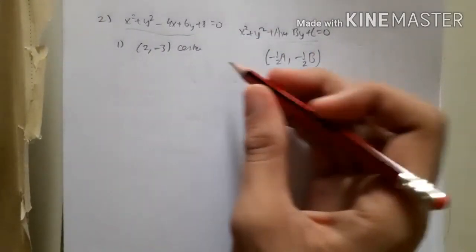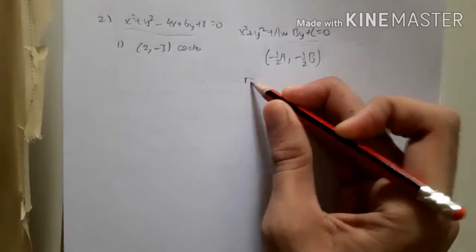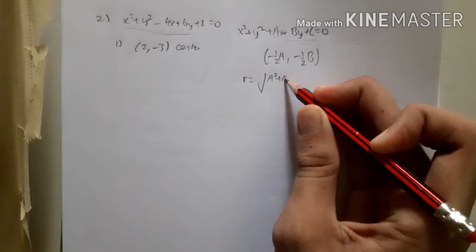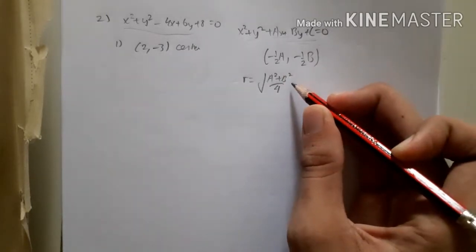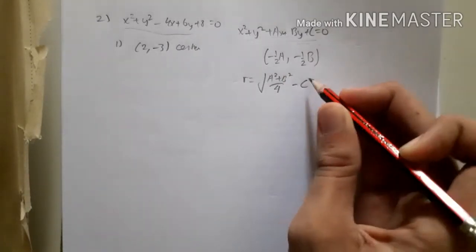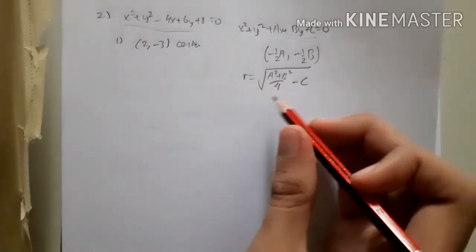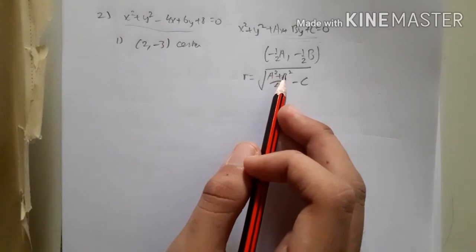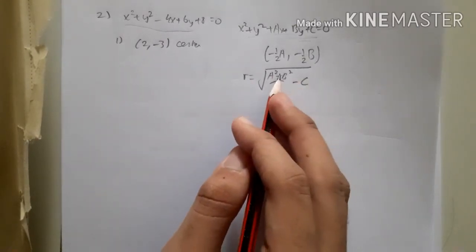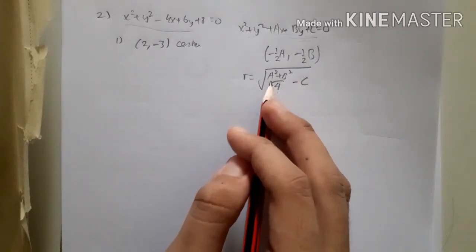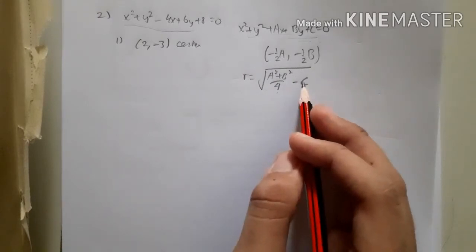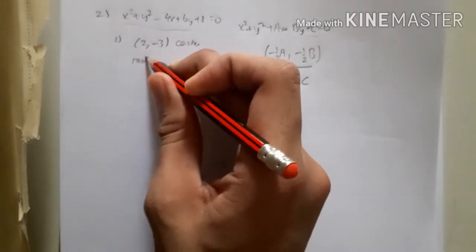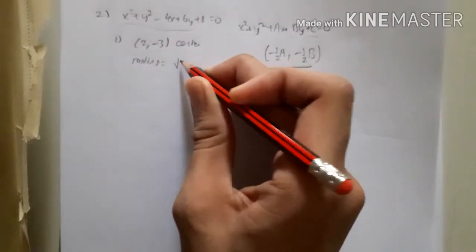You can also find the radius using a simple formula for the general equation: √(a²/4 + b²/4 - c). Here, a² = 16 and b² = 36, so 16 + 36 = 52, divided by 4 is 13, minus c which is 8, giving 13 - 8 = 5. So the radius is √5.